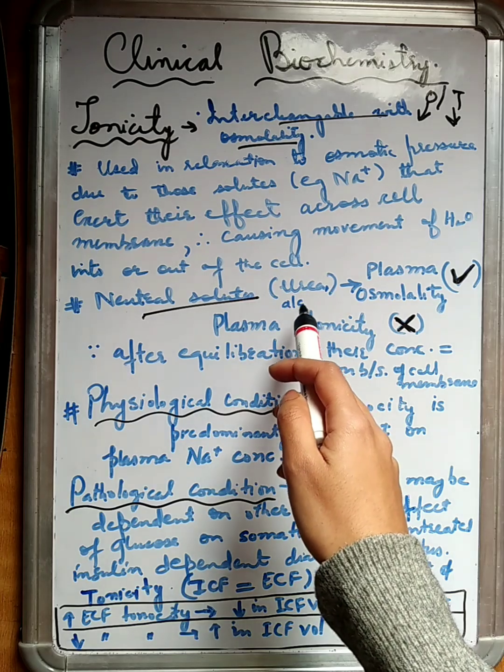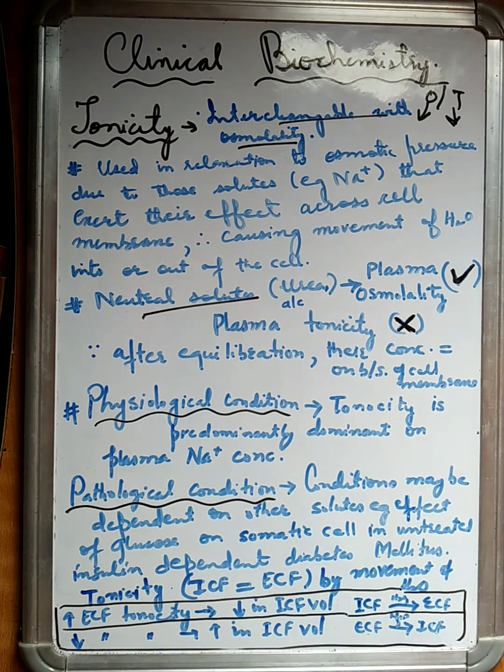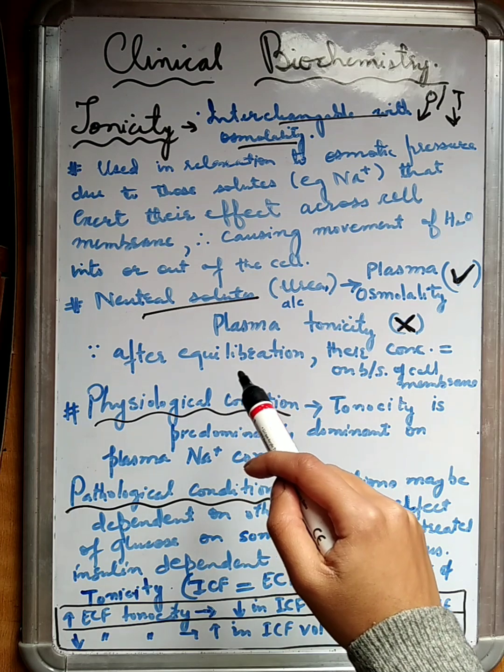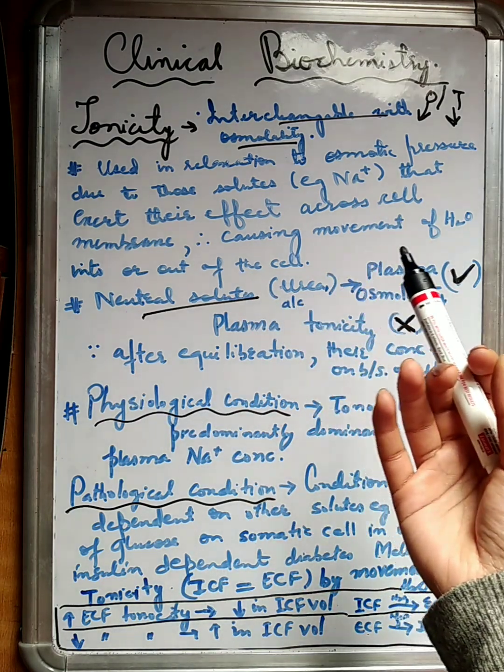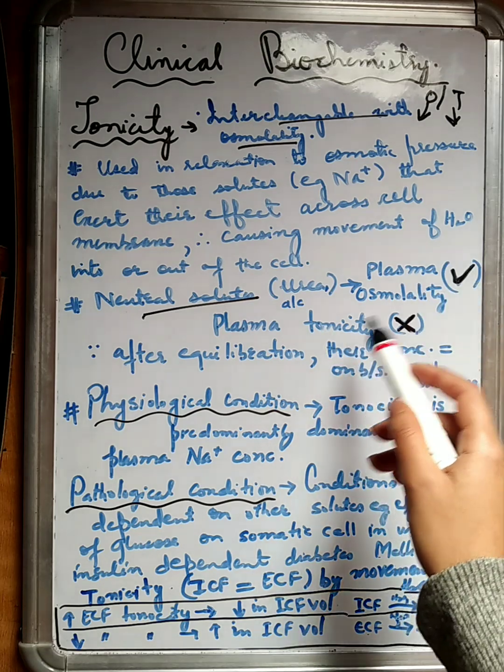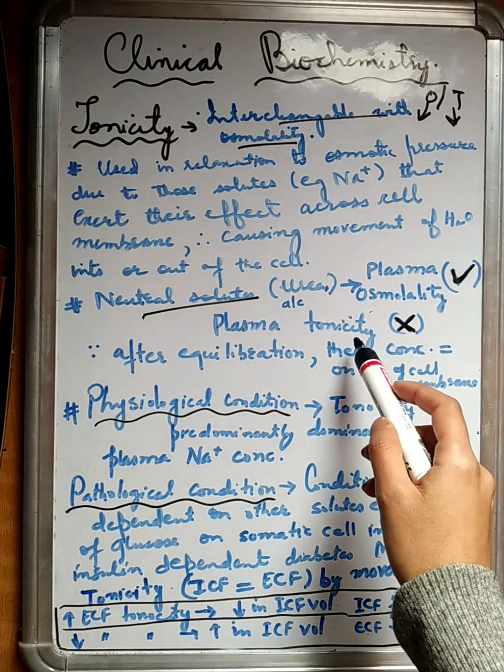We gave the example of urea and alcohol, for example ethanol and urea. These are the neutral solutes. Neutral solutes usually don't contribute to tonicity. They only contribute to plasma osmolality, not to tonicity.